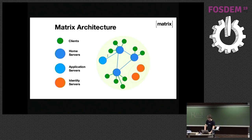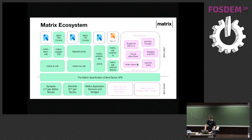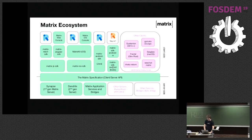Architecturally, you get clients, a mesh of servers, and application services — being clients on steroids. You also have identity servers which map email addresses and phone numbers through to Matrix IDs. In terms of the ecosystem today, we have stacks on the web and iOS, two Android stacks — a Java one and a brand new Kotlin one which performs about 10 times better and uses Rx. We provide SDKs at the API level and higher-level UI components, with apps like Riot on top.